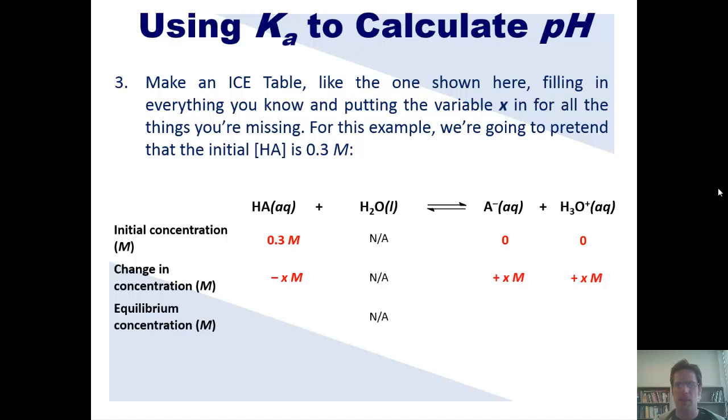Hopefully you're okay with that. Now the final row is, of course, made by just adding up what's present in the first row by what's present in the second row. So my final row, E, is going to have 0.3 minus X molar concentrations of HA. And my individual rows for A-minus and H3O-plus and my equilibrium concentrations for my products are going to be X.